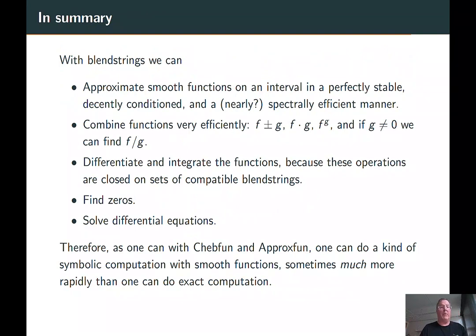All right, in summary, with blendstrings, we can approximate smooth functions on an interval in a perfectly stable, decently conditioned, and nearly spectrally efficient manner. Maybe it's actually spectral, I don't know. You can combine functions very efficiently, you can differentiate and integrate the functions and find zeros, you can solve differential equations much like Chebfun and Approxfun. One can do a lot of symbolic computation, a kind of symbolic computation with smooth functions, and sometimes much more rapidly than one can do exact computation, and maybe this makes the exact computation unnecessary.